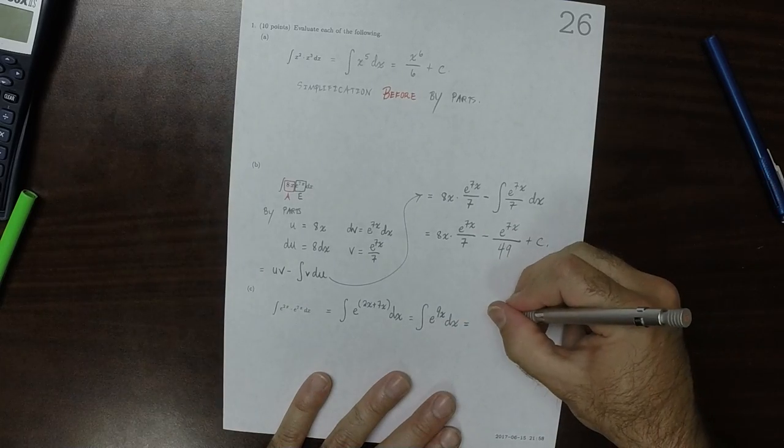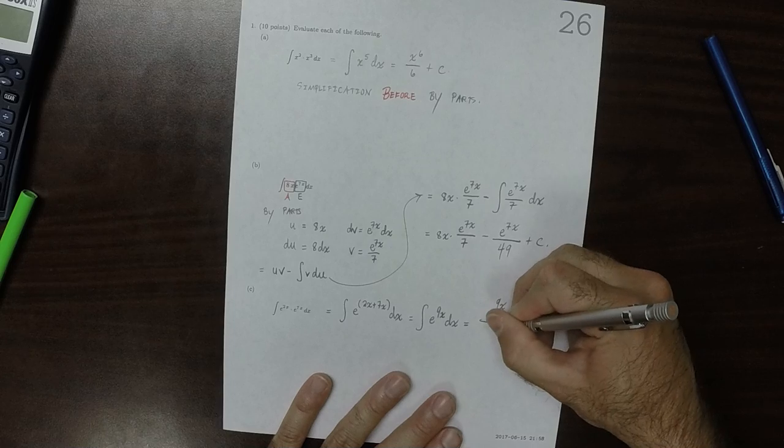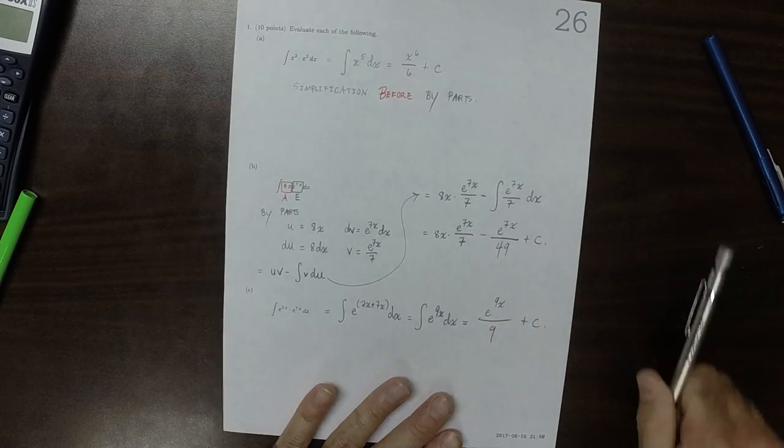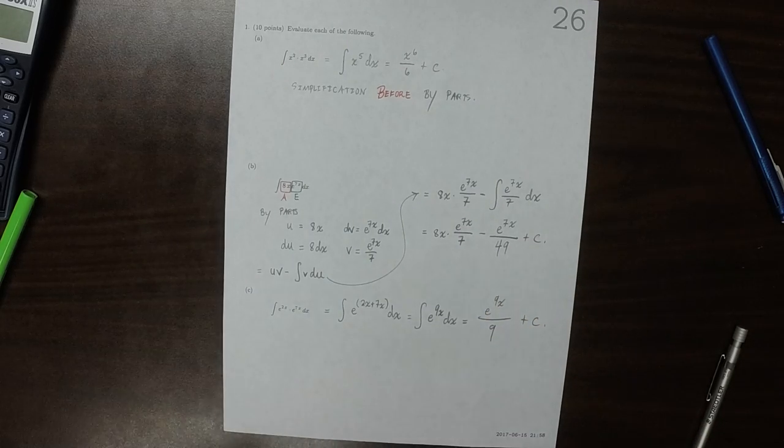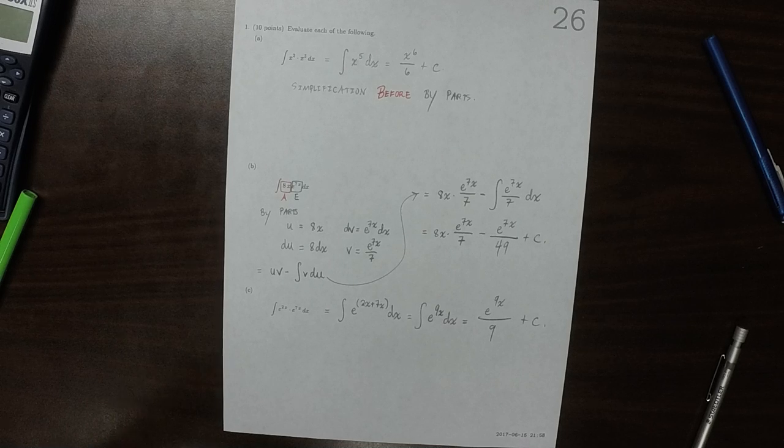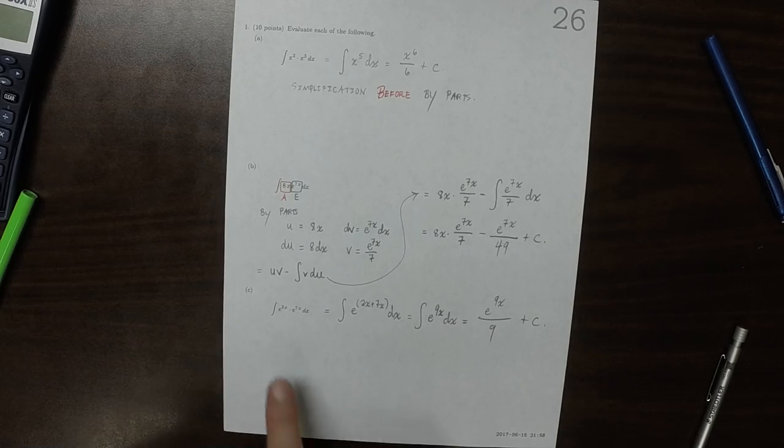So that would be e to 9x over 9, plus a constant. And again, the point of putting part c in there, is to check you to see whether or not you're going to attempt by parts.